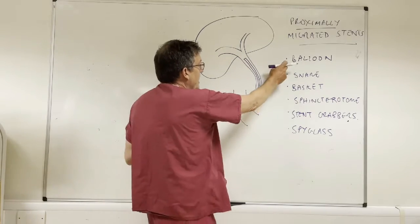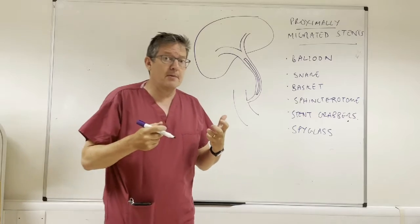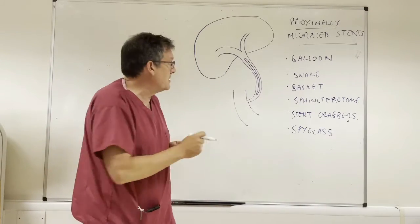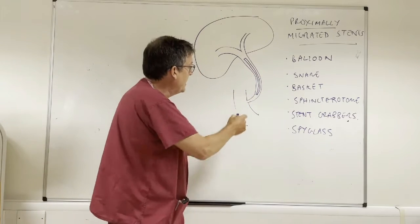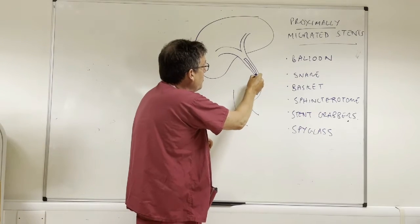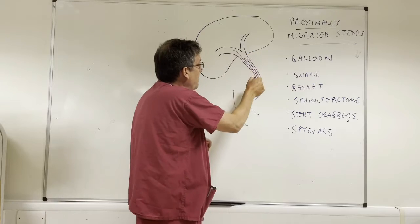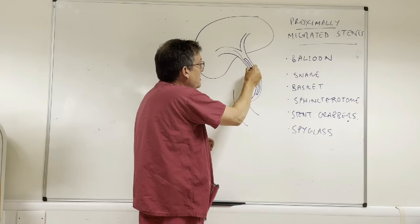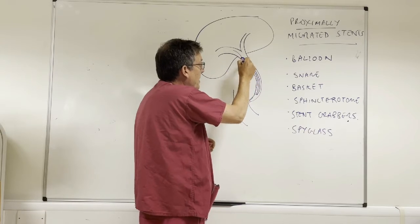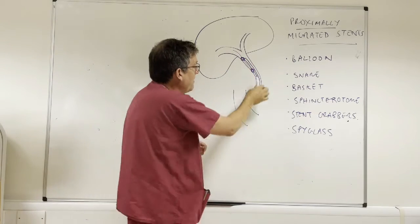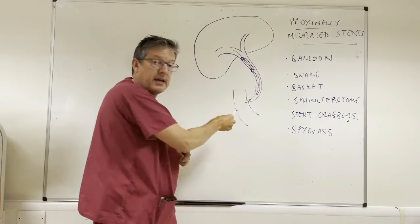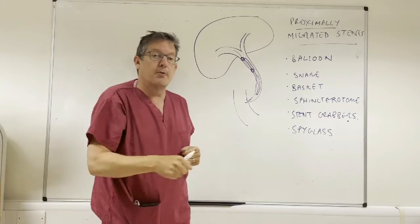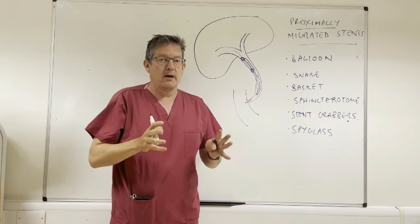So top of the list here is a balloon. Now actually you'll hear quite a lot of people saying that an approach to removing a proximally migrated biliary stent is to put a wire up beside the stent, blow the balloon up either in the middle part of the stent or at the top part of the stent and pull down and the stent beautifully gets drawn down into the duodenum as you pull back the balloon. It never works.